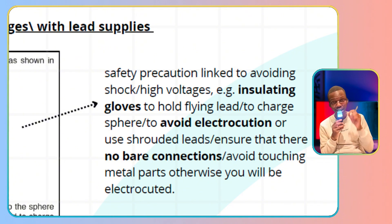Use insulating gloves to hold flying leads to a charged sphere to avoid electrocution, or use shrouded leads—leads that ensure there's no bare connection. You can avoid touching metal parts. Either insulate and use insulating gloves to avoid electrocution, avoid touching bare parts, or ensure there are no bare connections in the first place.